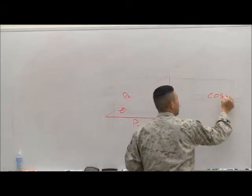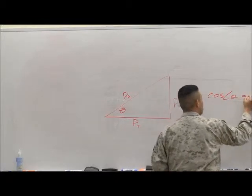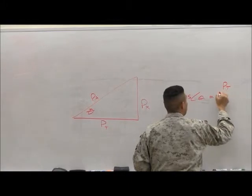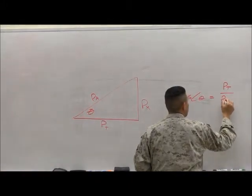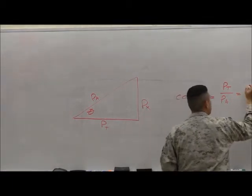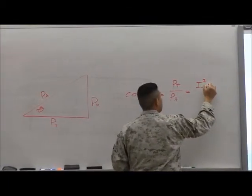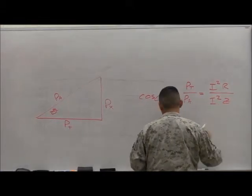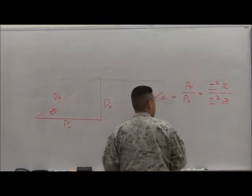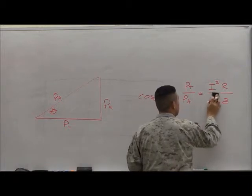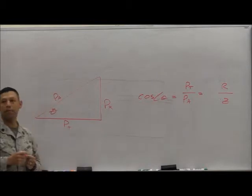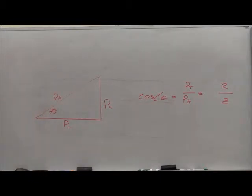So cosine of angle theta equals true power over apparent power equals I squared R over I squared Z. Maybe the I squareds cancel each other out, right? Same power factor, R over Z.